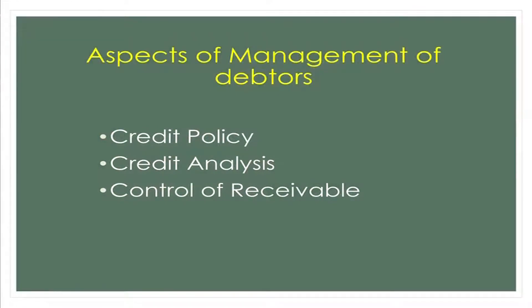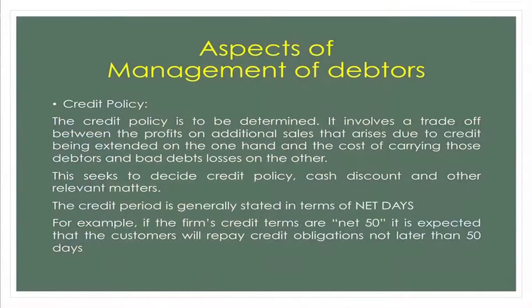There are three important aspects of management of sundry debtors: credit policy, credit analysis, and control of receivables. The credit policy involves a trade-off between the profits on additional sales that arise due to credit being extended on one hand, and the cost of carrying those debtors and bad debt losses on the other. The credit period is generally stated in terms of net days — for example, net 50 means customers must repay not later than 50 days.